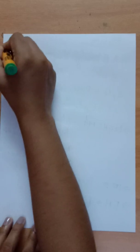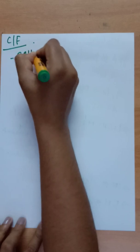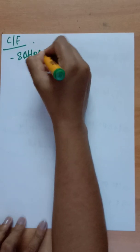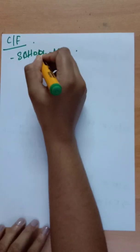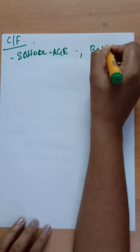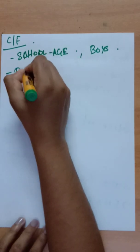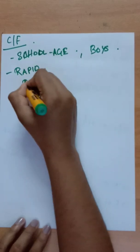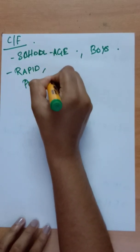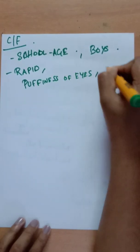Regarding clinical features: post-streptococcal glomerulonephritis typically affects school-age children and is more common in boys. It is uncommon below 3 years of age. Onset is rapid, with puffiness around the eyes and pedal edema as early features.